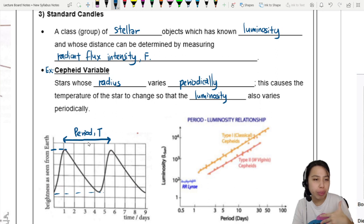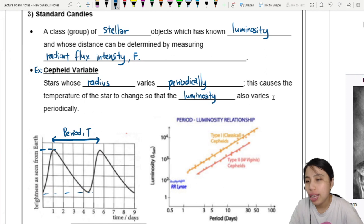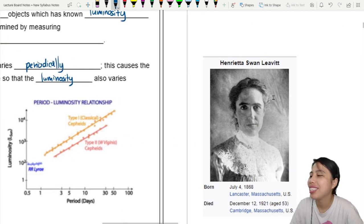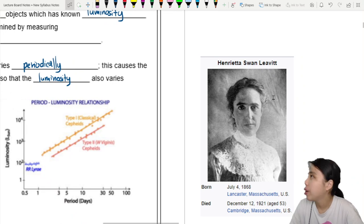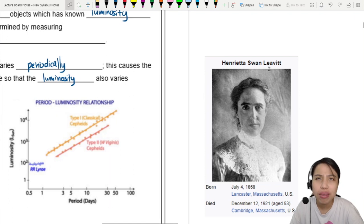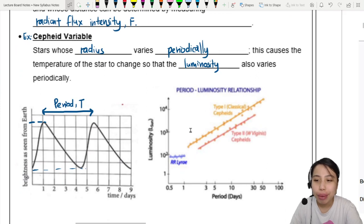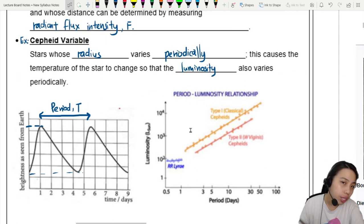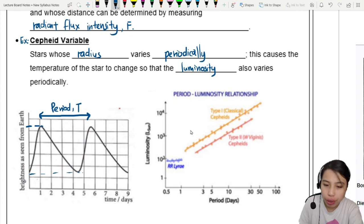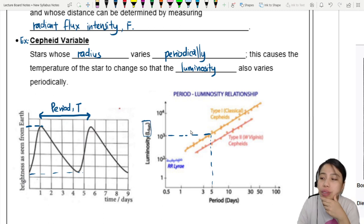How does that get us luminosity? Because the reason for standard candles is to get luminosity. Then comes this lady, an old astronomer who studied the skies for a very long time and came up with the period-luminosity relationship, also known as Leavitt's law. Hats off to this lady who spent a lot of time in the olden days. This period-luminosity relationship gives us the thing that we need.